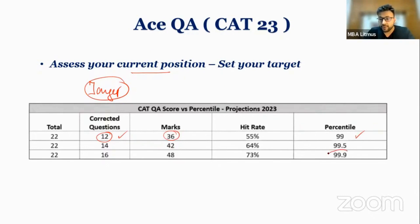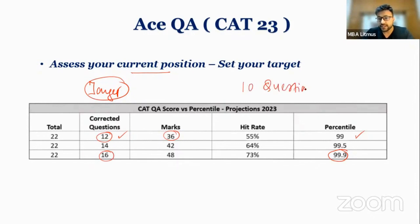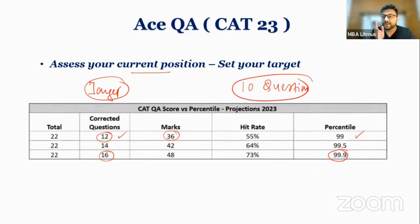If I want to go to 99.9, then it will be 16 questions. Anybody who is aiming for 96, 97, or 98 percentile should aim for at least 10 questions. So your first target is 10 questions — choose 10 questions. You need to figure out your current position first.